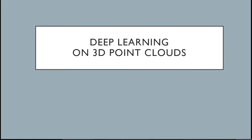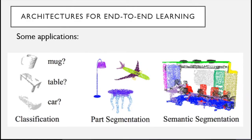I'm going to talk about deep learning methods on 3D point clouds. These are methods, architectures, which take raw point clouds as the input. So they don't convert the point clouds into any other form like voxel grids or images. They just take the XYZ coordinates of the point sets and then perform some tasks.